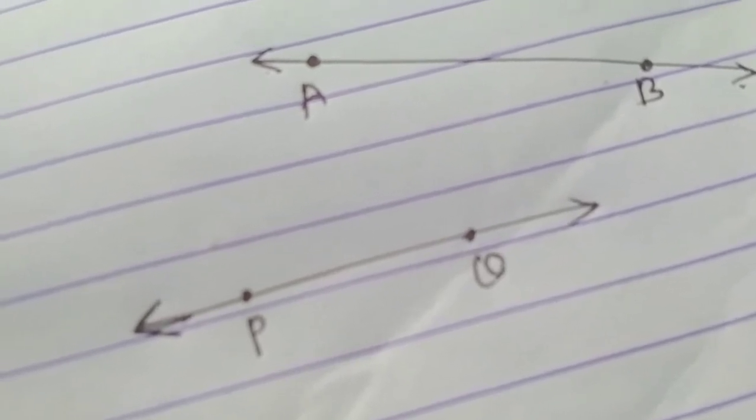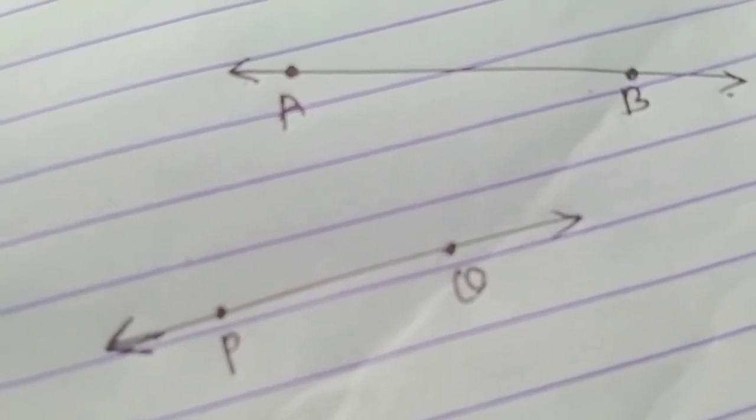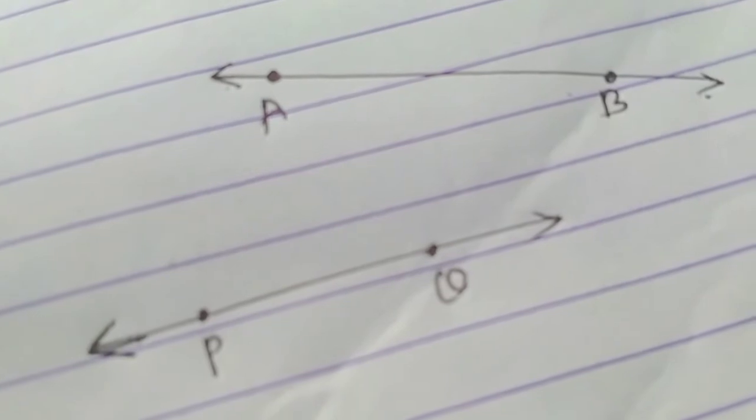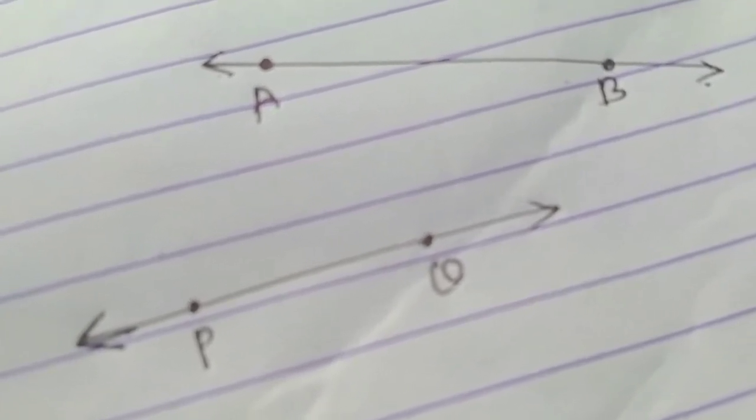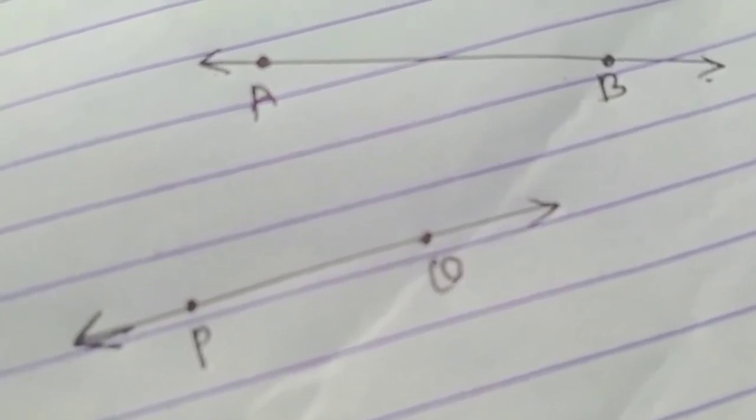We write line segment AB as segment AB in short. A and B are its end points. A line is named using a small letter or by using any two points on the line.